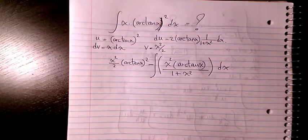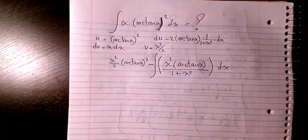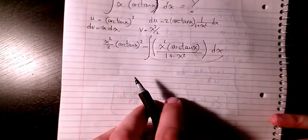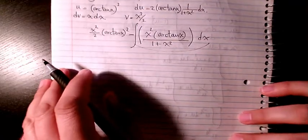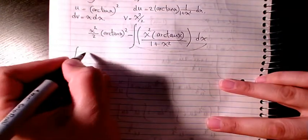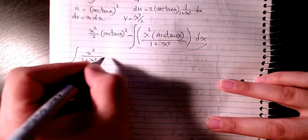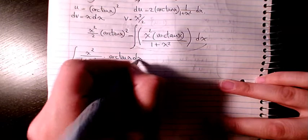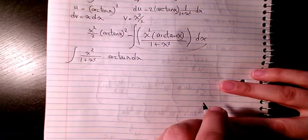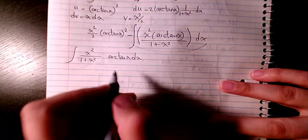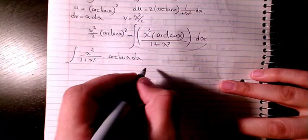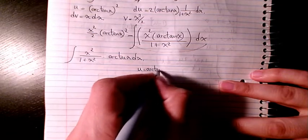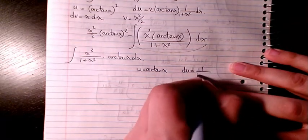Now I want to do another integration by parts to find the answer to this integral. It's going to be the integration of x²/(1 + x²) times arctan(x) dx. For integration by parts, I consider u as arctan(x), so du will be 1/(1 + x²) dx.